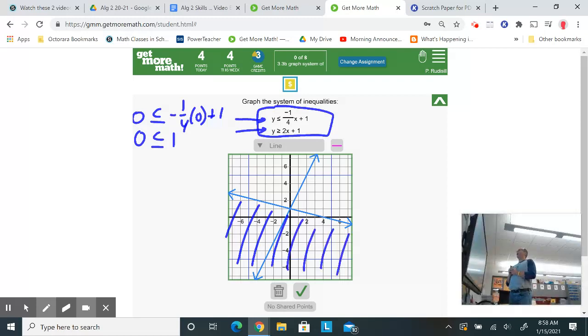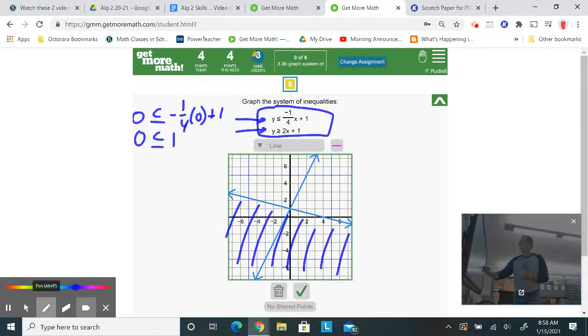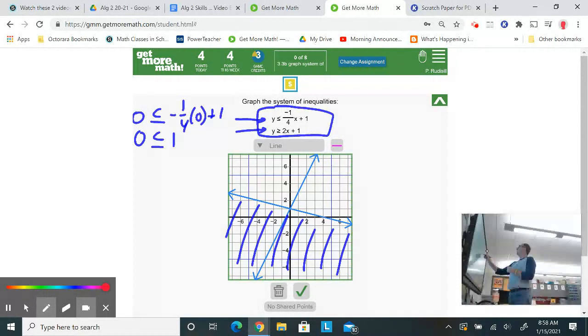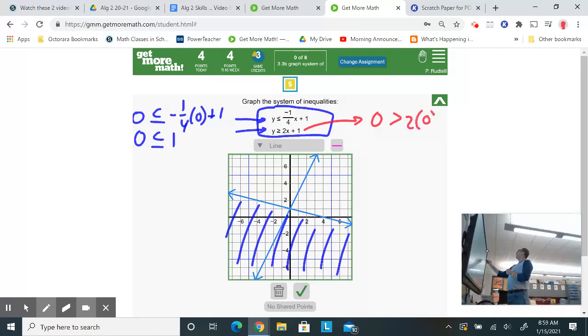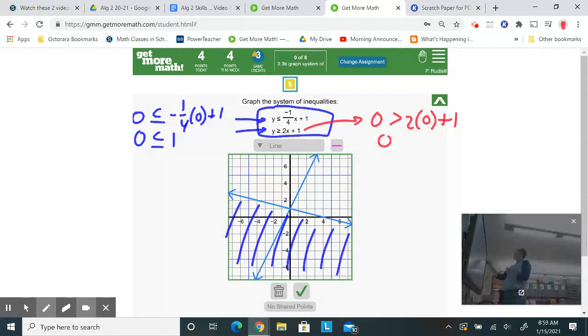Now for the other inequality, I'm going to test zero, zero. Let me use red this time. I'm going to test this. I'm going to go over here and test zero, zero. I'm going to put a zero in for y, zero in for x. Again, I'm writing it all out so you can see what I'm doing, but you should be able to do that in your head. Two times zero is zero. Zero plus one is one. Is zero greater than one? The answer is no, zero is not greater than one.